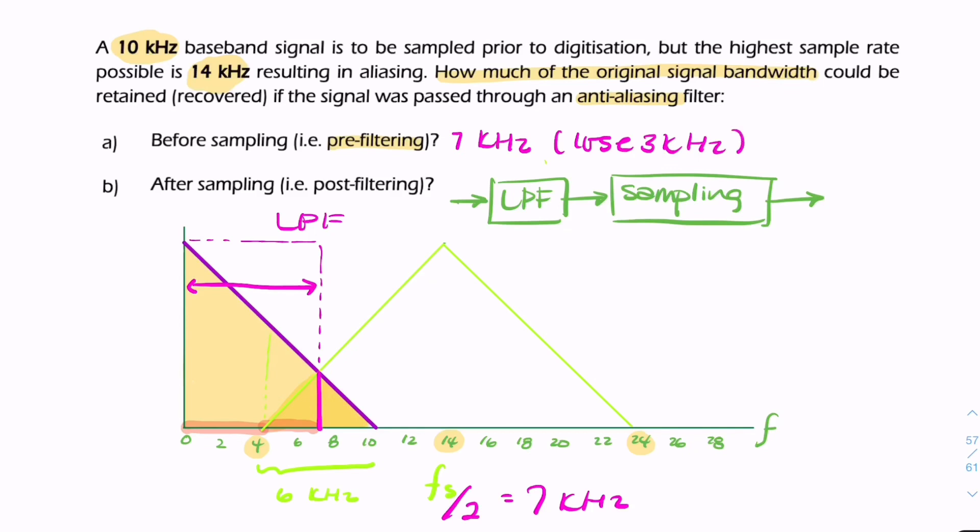This would now be critical sampling. You'd have that as your first spectrum, and then the replica would look like this, extending to